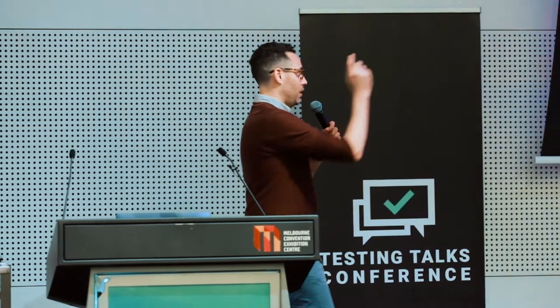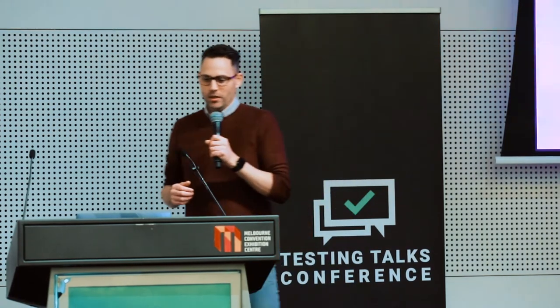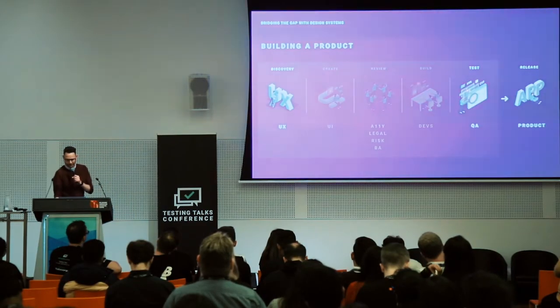So by the time it ends up with QA, we've got incomplete stories, incomplete designs, designs that don't match what the code is. We've got multiple sources of truth in JIRA stories. It ends up quite messy, from my experience.